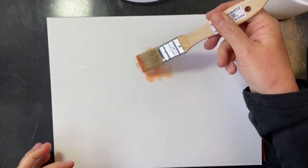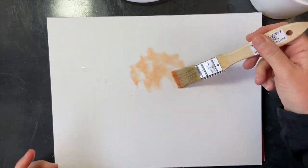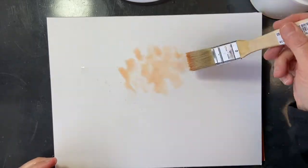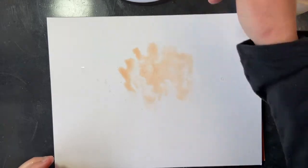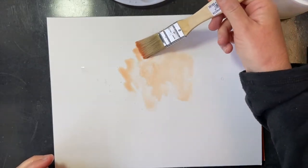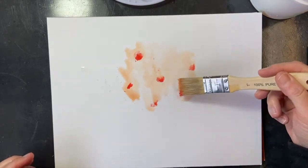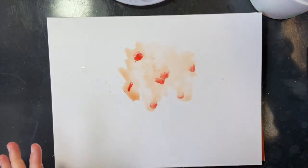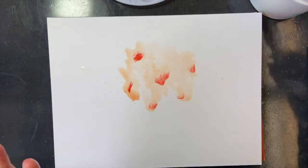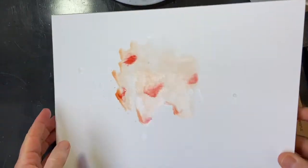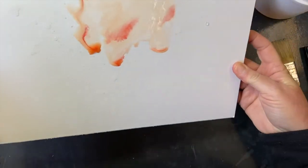You do want some areas that are bigger splotches. You can see how light this is - it's not very dark at all. I can add a little bit of darker area. This is just going to happen. You're not going to really worry about the shape of this.